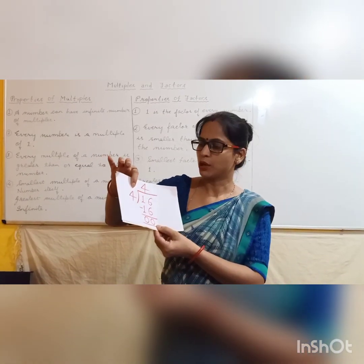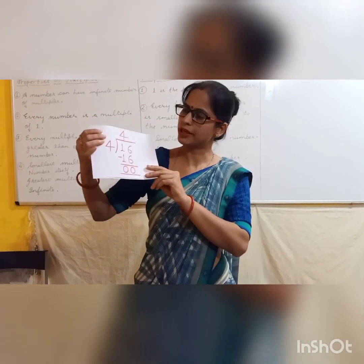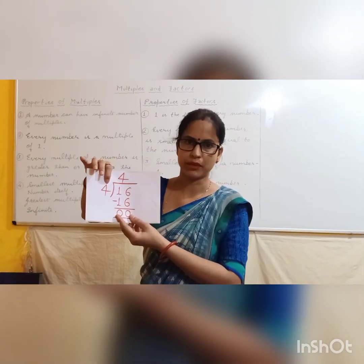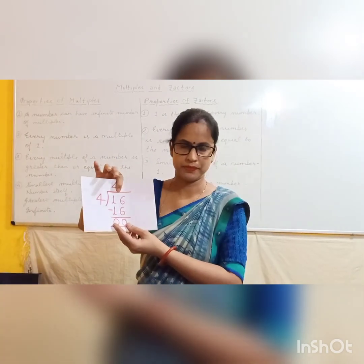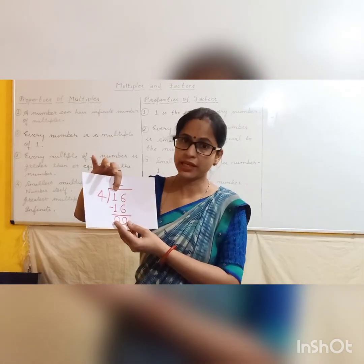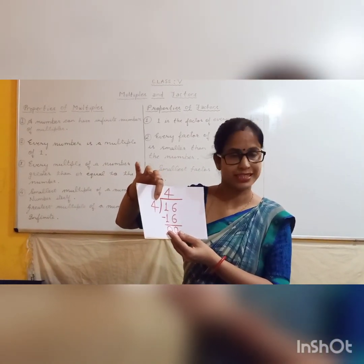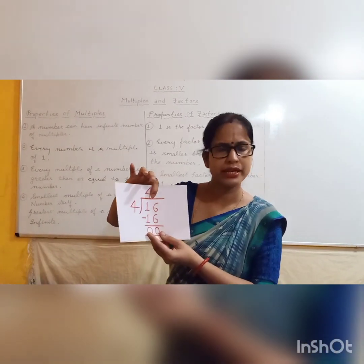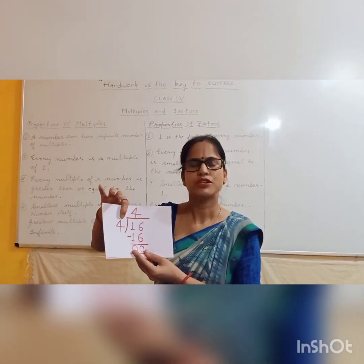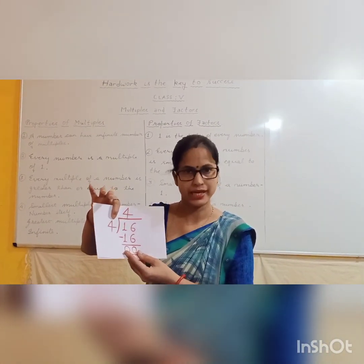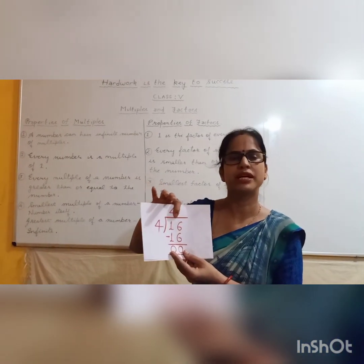Now I want to introduce a new topic. When any smaller number divides a bigger number, and the bigger number is completely divisible by the smaller number, then the bigger number is the multiple of the smaller number, and the smaller number is the factor of the bigger number.